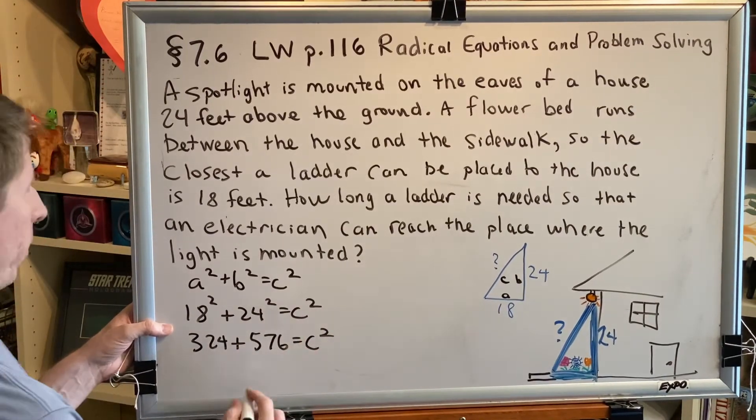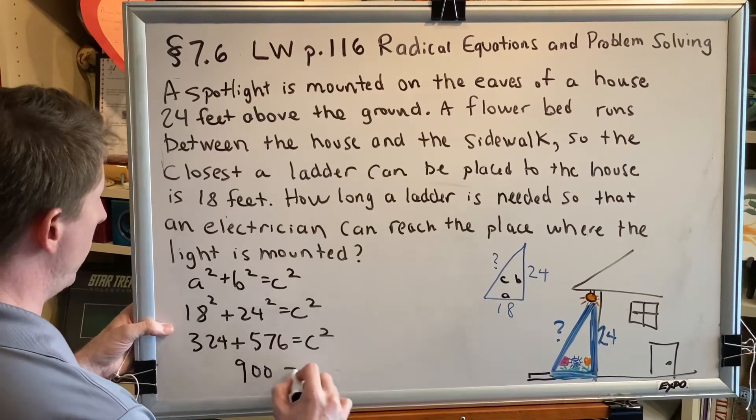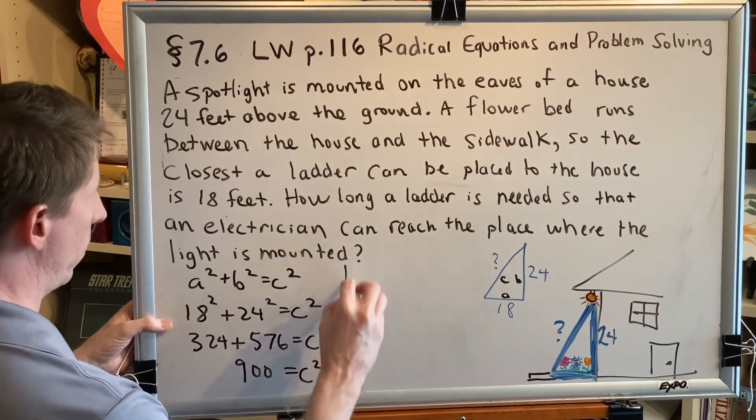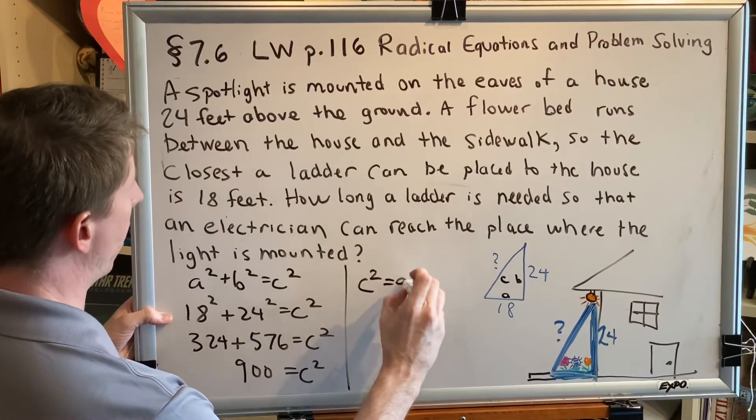And 324 plus 576 is 900, so we get 900 = c², or if you prefer, c² = 900.